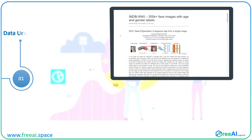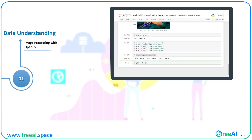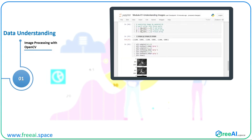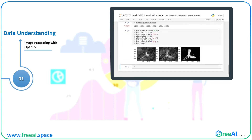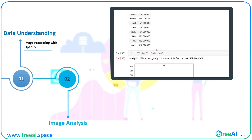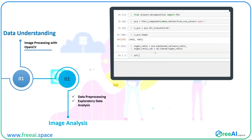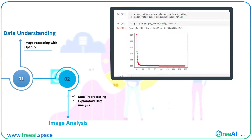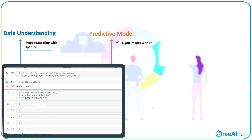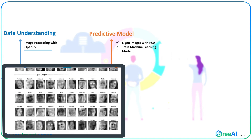Starting from gathering the data, which are highly unstructured images, we then understand the data by learning image processing techniques in OpenCV and get the mathematical concepts behind the images. Once we know the math behind the data, we do the necessary image analysis and preprocessing techniques, then extract features from the image by computing eigenimages using Principal Component Analysis and Singular Value Decomposition.